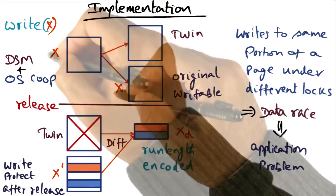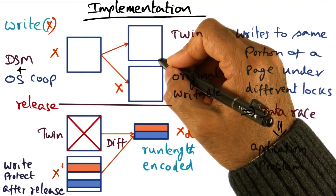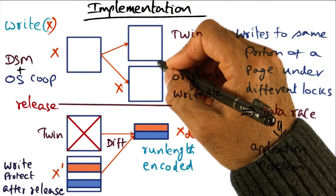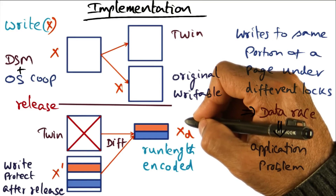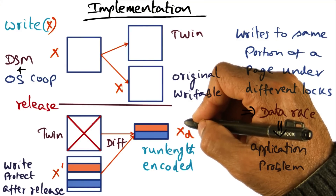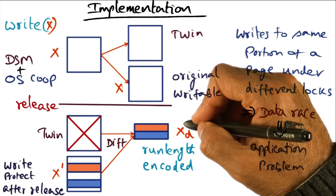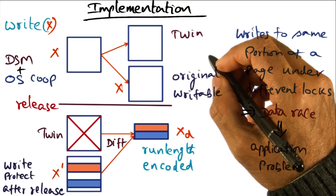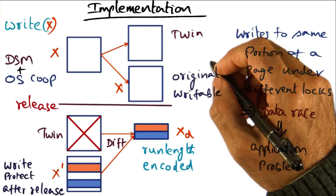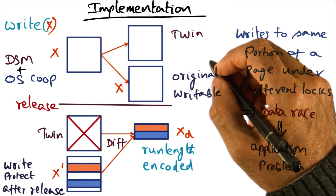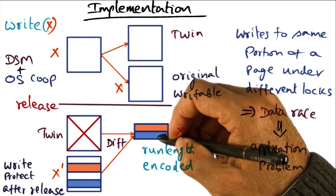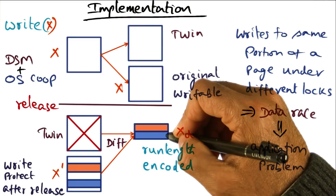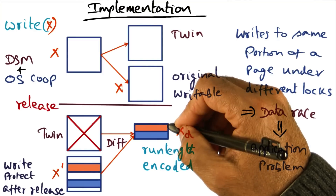One of the things that happens in DSM software is garbage collection. You keep a watermark of the amount of diffs that have been created in the entire system. If it exceeds a threshold, you start applying these diffs to the original copy of the page at the owner so that you can then get rid of the diffs completely. The diffs are going to be lying around until the next time the page is accessed by someone, so you reduce space overhead by periodically doing garbage collection and applying the diffs to the original copy of the page.